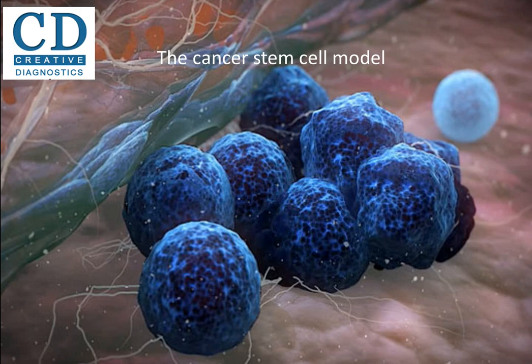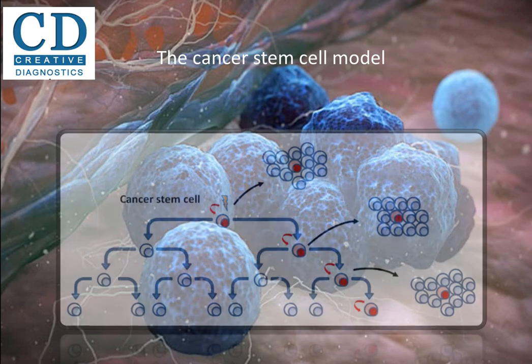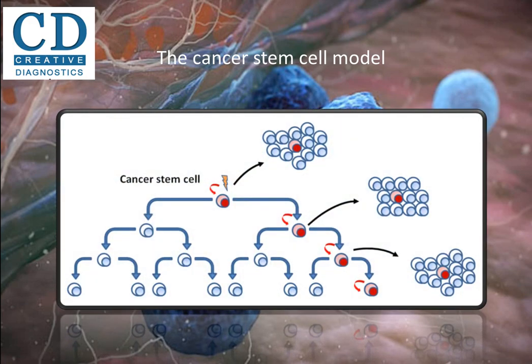Because of these findings, a cancer stem cell model was proposed. The model, also known as the hierarchical model, proposes that tumors are hierarchically organized. Within the cancer population of the tumors, there are cancer stem cells that are tumorigenic and biologically distinct from other subpopulations. They have two defining features: their long-term ability to self-renew, and their capacity to differentiate into progeny that is non-tumorigenic but still contributes to the growth of the tumor.